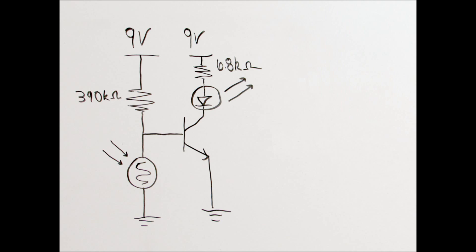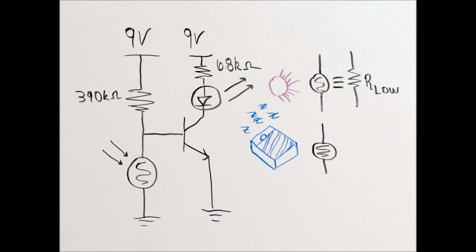Let's take a look at how we can use this information to design our nightlight circuit. The function is for the LED to be on when there is no light on the photoresistor, and the LED to be off when there is light on it. In circuit terms, when there is light on the photoresistor there is low resistance, and when there is no light there is high resistance. Let's look at how these varying resistances will affect the behavior of this circuit.